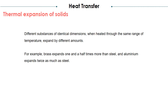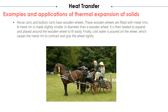Thermal expansion of solids: different substances of identical dimensions, when heated through the same range of temperature, expand by different amounts. For example, brass expands one and a half times more than steel, and aluminium expands twice as much as steel. Let's see some examples and applications of thermal expansion of solids.